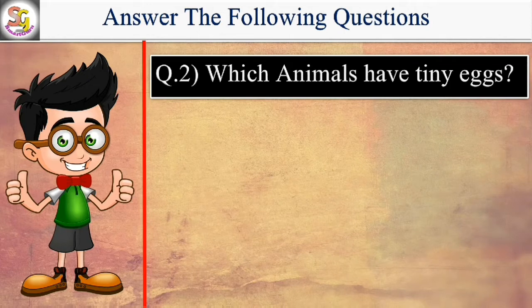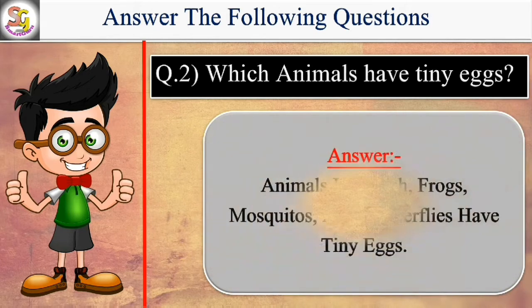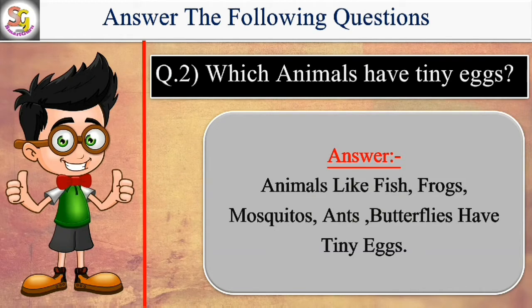Which animals have tiny eggs? Animals like fish, frogs, mosquitoes, ants, butterflies have tiny eggs.